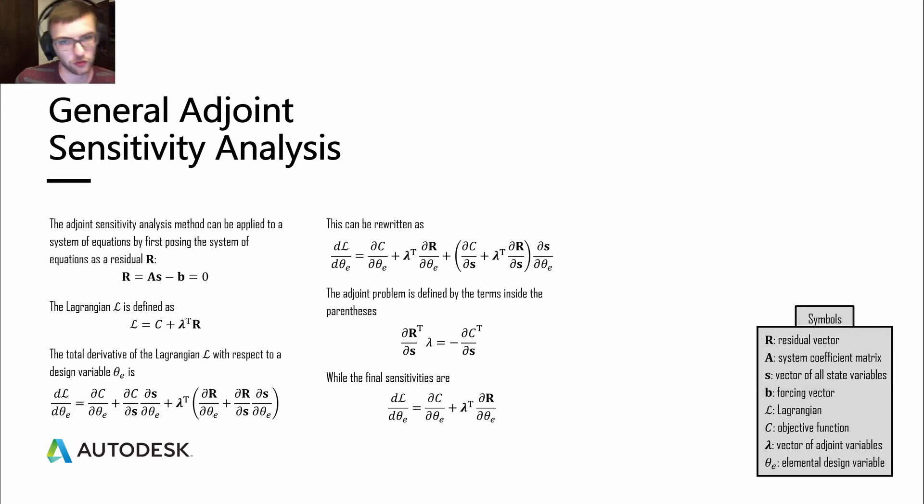We have this Lagrangian and we can take the total derivative of Lagrangian with respect to the design variable theta. You get these two terms, one that's multiplied by lambda transposed, and the other one that is just free. We can rewrite these so that we have the derivative of the state variables with respect to the design variable. What ends up happening is this term becomes the adjoint problem. What's remaining is our final sensitivities, which we have down there. These are the sensitivity coefficients that you get from the adjoint method.